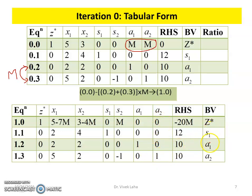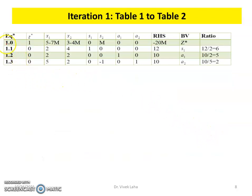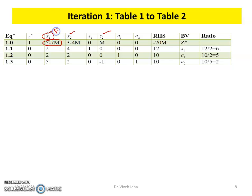The basic variables are S₁, A₁, and A₂, and the non-basic variables are X₁, X₂, and S₂. To test optimality, we look at the first row. The coefficient associated with X₁ is −5 − 7M, which is a very large negative quantity. Similarly, 3 − 4M is also negative. Since −7M is less than −4M, the value −5 − 7M is the most negative, and hence X₁ will be the entering basic variable.